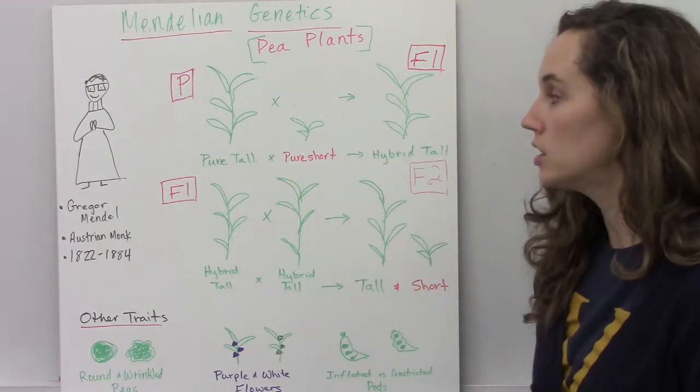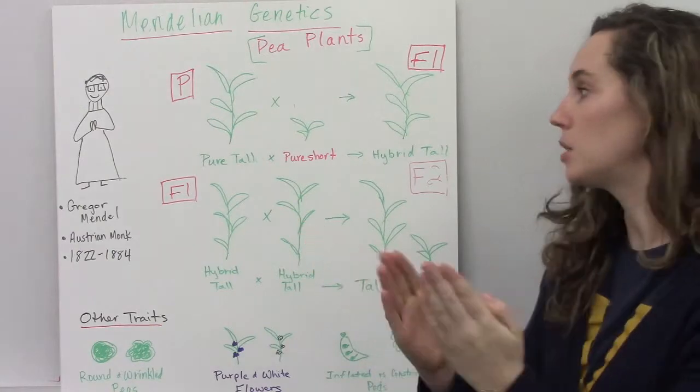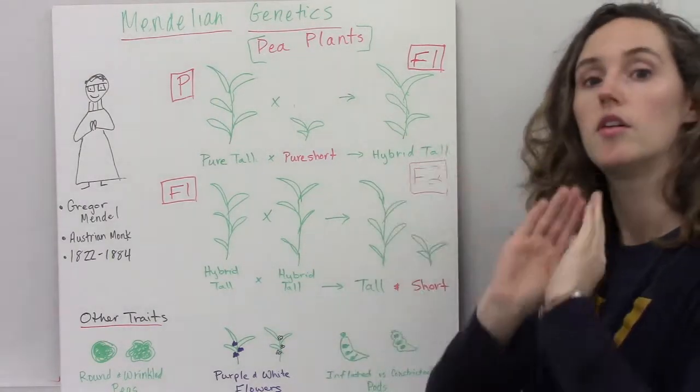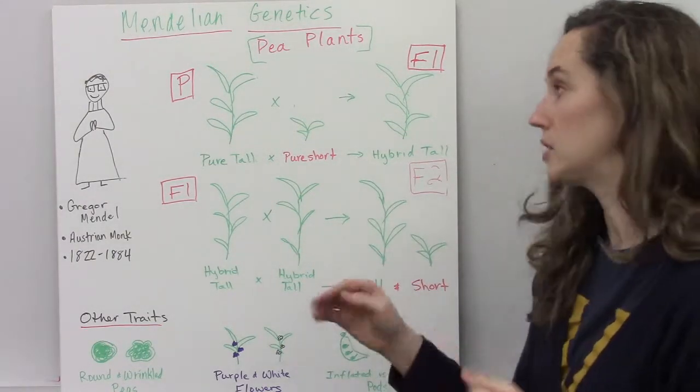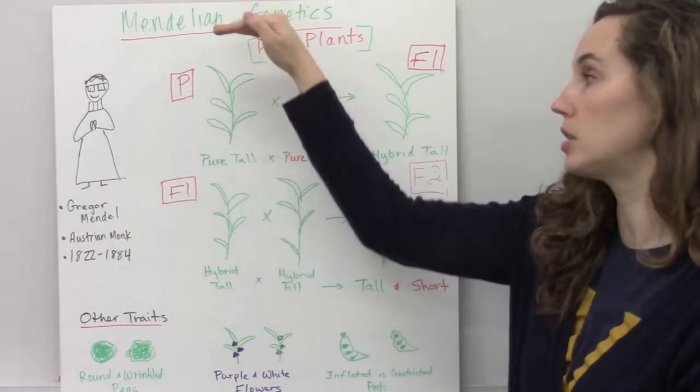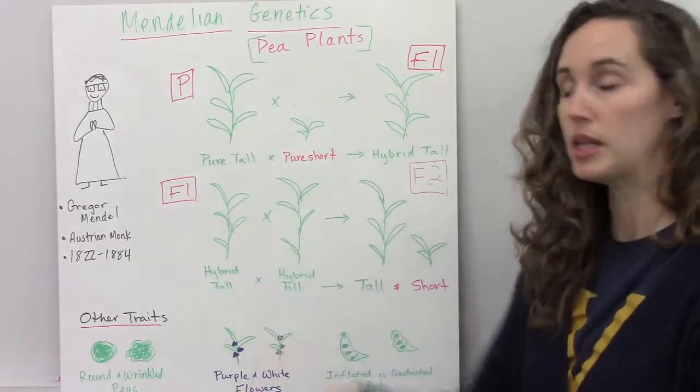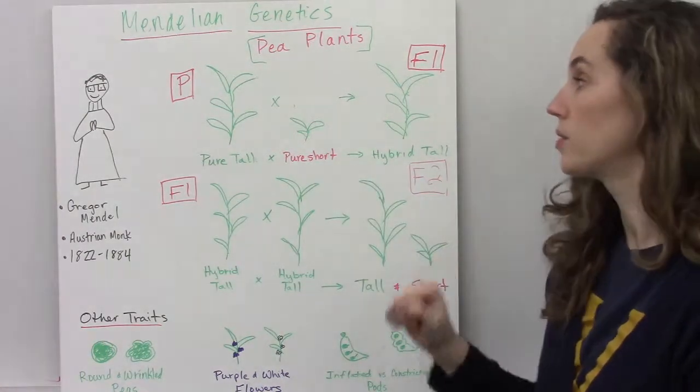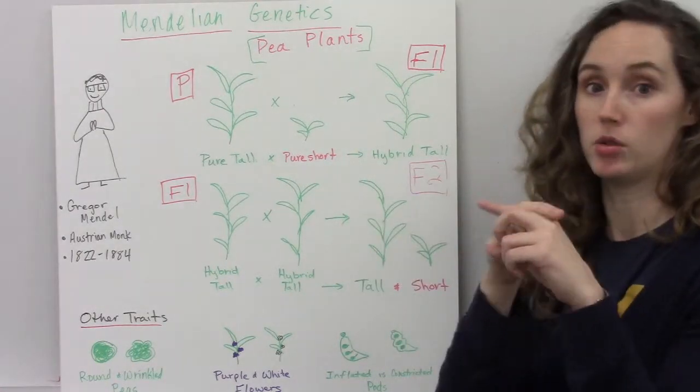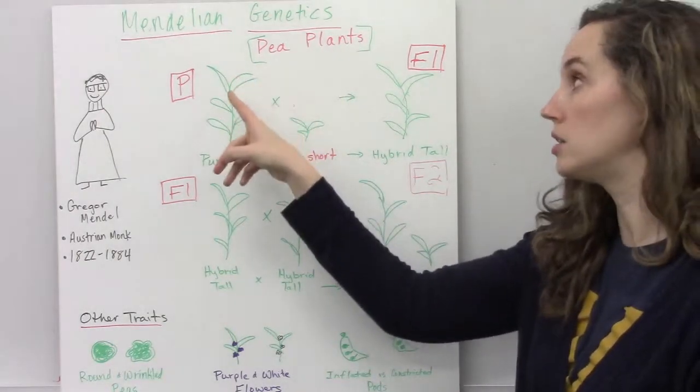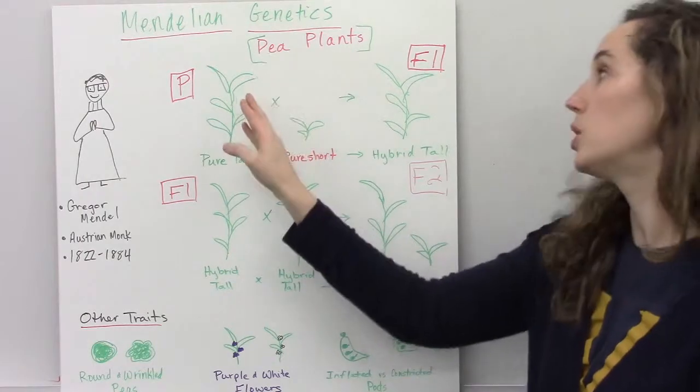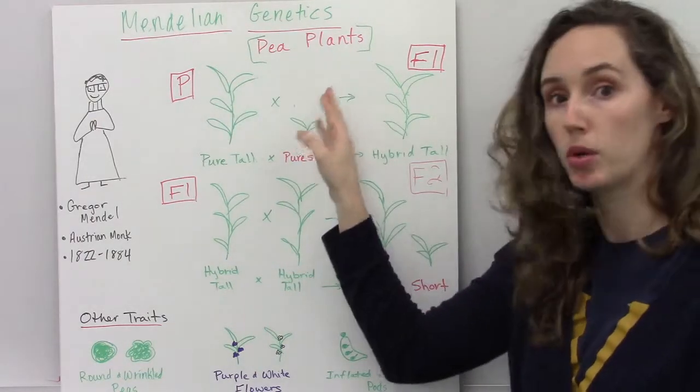He spent a long time developing some pure versions of pea plants. He developed a purely tall line of pea plants and a purely short. When he cross-pollinated those, he took the pollen from one plant and put it onto the female part of the other plant.